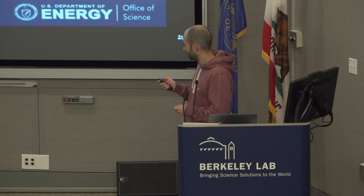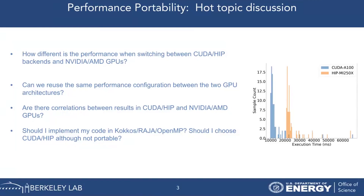Indeed, on the right you can see an analysis we ran for a kernel implemented in both CUDA and HIP. We tested different configurations on similar AMD and NVIDIA GPUs, and we saw that most CUDA configurations were, on average, twice faster than the AMD configurations. And this is interesting.